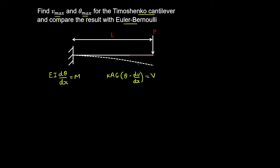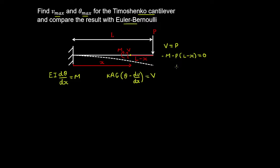We take a cut of the beam, thereby exposing the internal shear force and bending moment. This cut segment is at a distance x from the support, so it has a length of L minus x. Using statics, taking a vertical sum of forces, the shear force equals the point load P. Taking moments about the cut point, the bending moment minus P times (L minus x) equals zero, so the bending moment is equal to P times (x minus L).